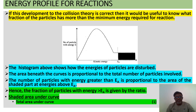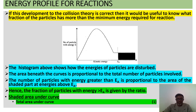Using the collision theory and the energy profile, we look at number of particles with energy on the y-axis and kinetic energy on the x-axis. The area painted black shows the molecules that have enough energy — more than the activation energy Ea — and are going into reaction. The histogram shows how the energies of particles are distributed. The area beneath the curve is proportional to the total number of molecules. The number of particles with energy greater than Ea, shown by the shaded area, is proportional to the shaded area above Ea. Hence, the fraction of particles with energy greater than Ea is given by the shaded area under the curve over the total area.